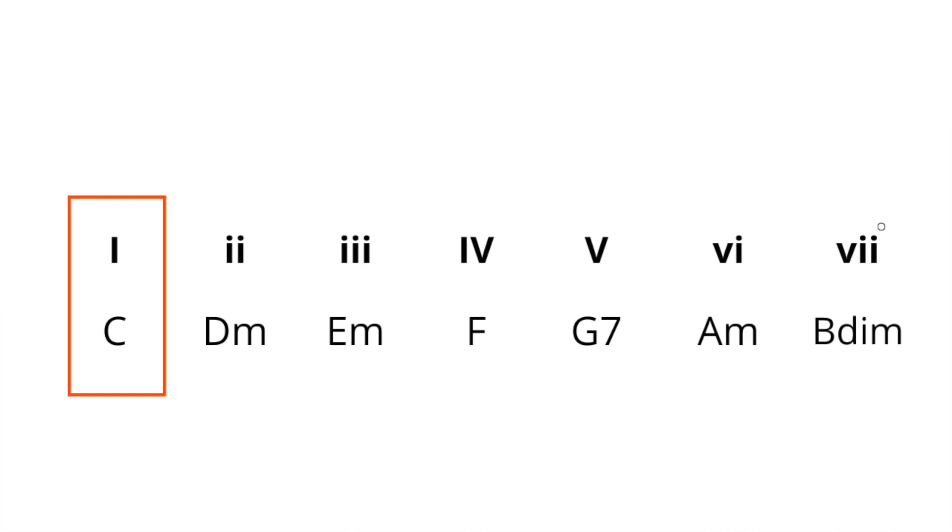That five-to-one cadence gives a beautiful resolved sound. The dominant seventh chord leaves things hanging — there's tension — and then we resolve that tension. That's music in a nutshell: tension and release. The dominant seventh chord provides the tension, and the resolution to the one chord, C in this case, provides the release of that tension.